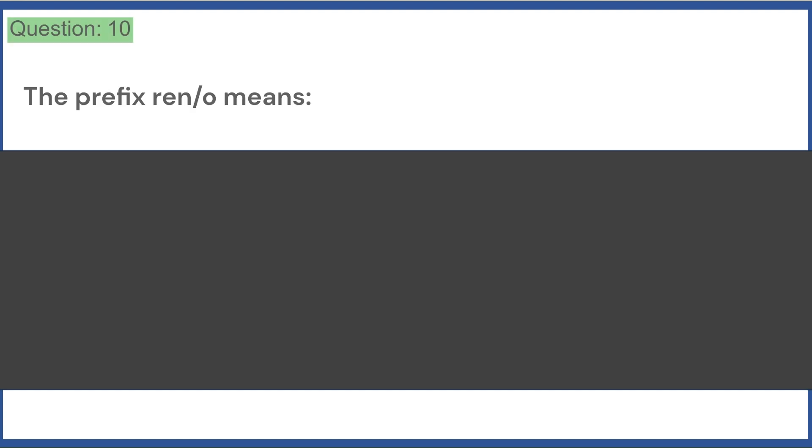The prefix reno means: a. Kidney b. Nerve c. Bone d. Nose e. None of the above. Answer, A.